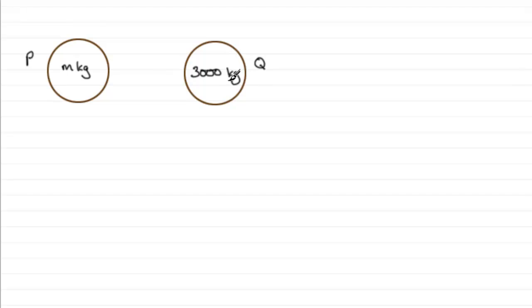And we're told that before they hit one another, let's just mark in that this is before. We're told that P is moving at 15 meters per second towards Q, and we're also told that Q is at rest. So you could put another arrow there saying zero meters per second, or you could write just at rest, it's up to you.